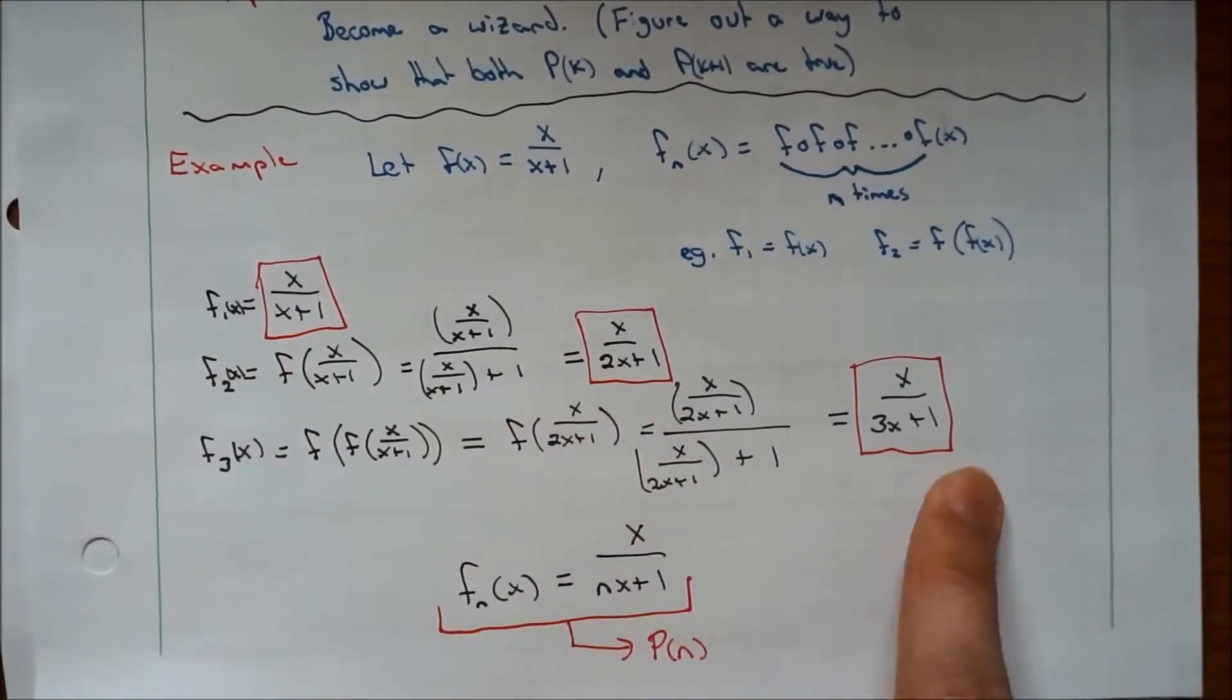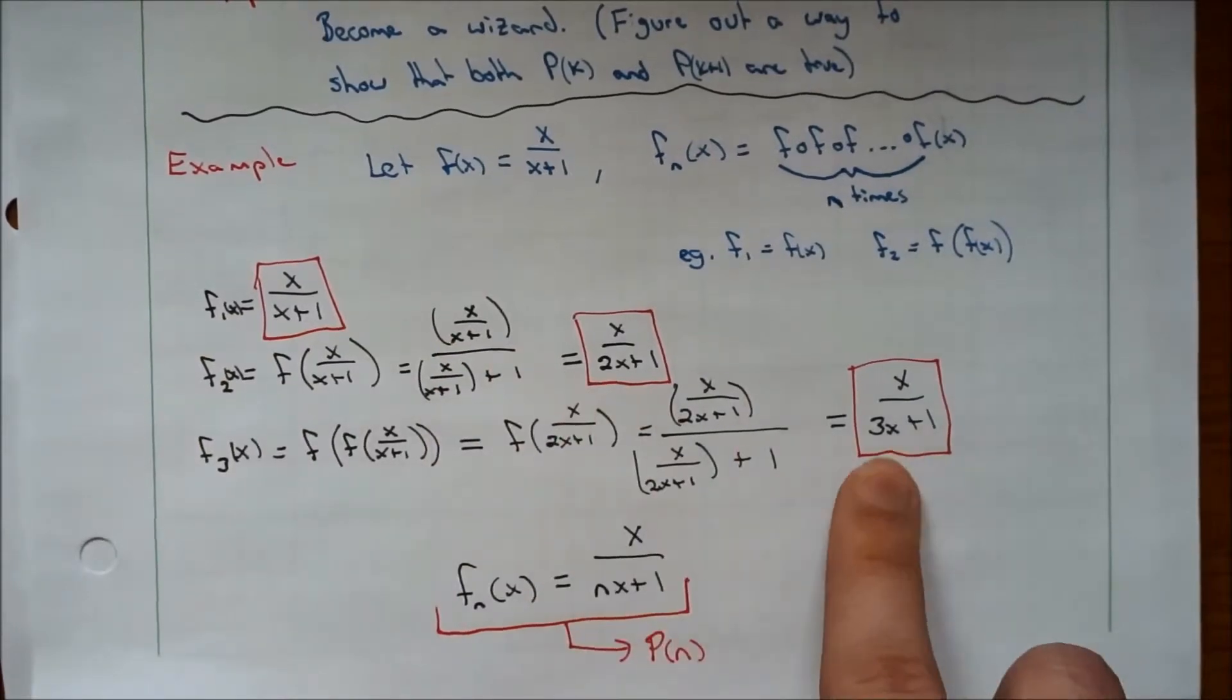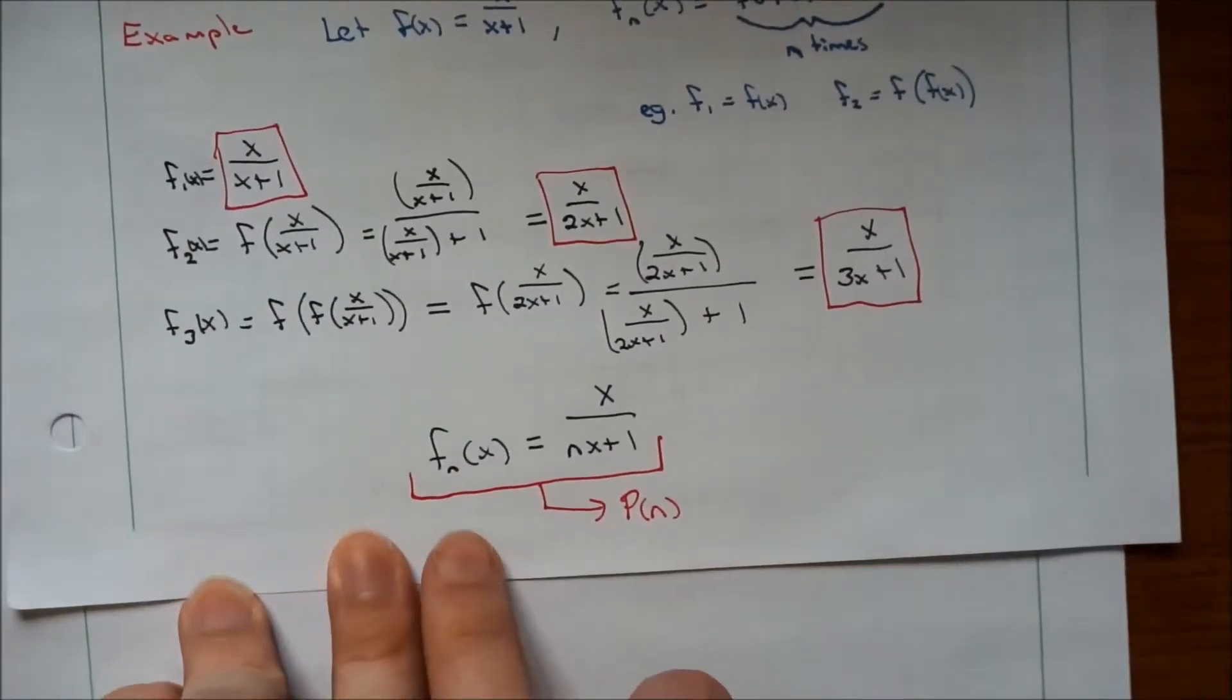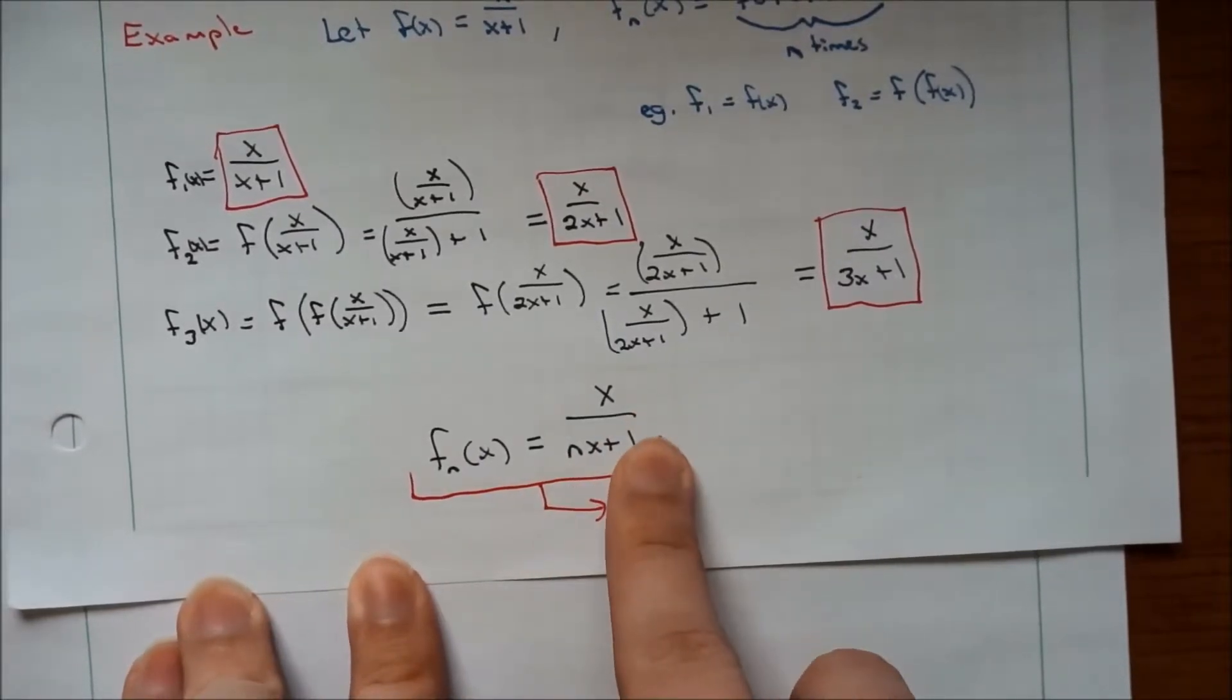Now if we look at these three things, there's a pretty obvious pattern here. You have 1x, 2x, 3x. So we're going to make a claim here that f_n(x) is x/(nx+1).